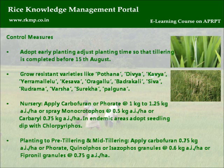For nursery: Apply Carbofuran 4-8 at 1 to 1.25 kg AI per hectare, or spray Monocrotophos at 0.5 kg AI per hectare, or Carbaryl at 0.75 kg AI per hectare. In endemic areas, adopt seedling dip with chlorpyrifos.